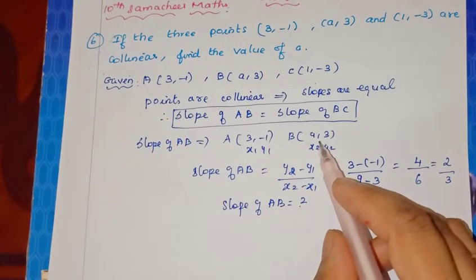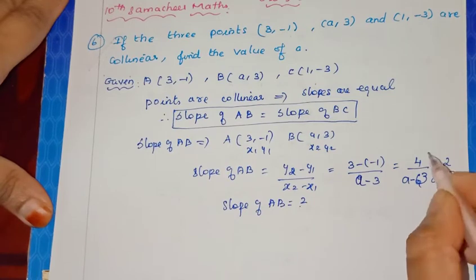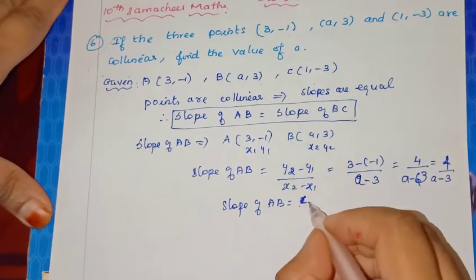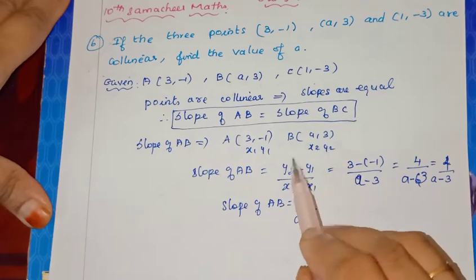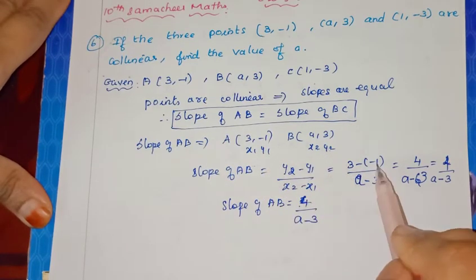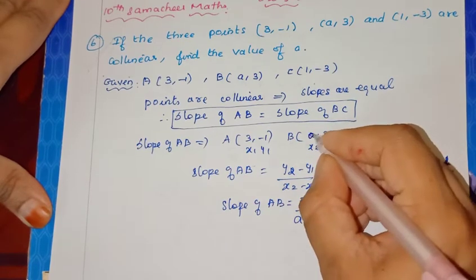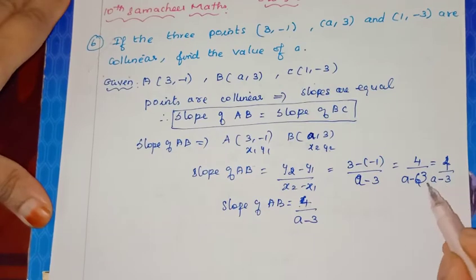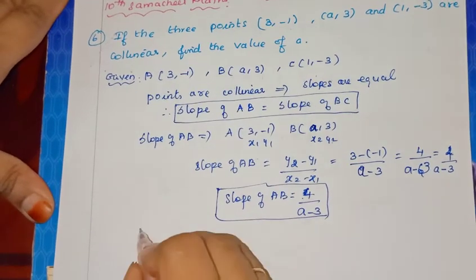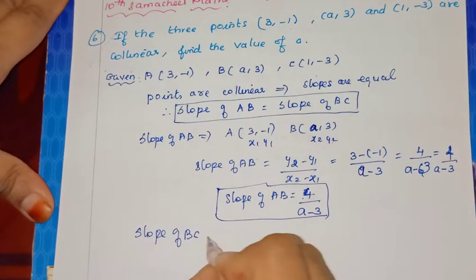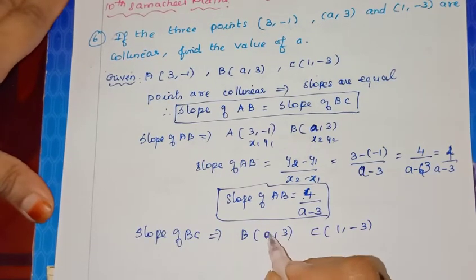So slope of AB is 4 by (a minus 3). Now for slope of BC: B is (a, 3), so x1 is a, y1 is 3. C is (1, -3), so x2 is 1, y2 is -3. Be careful: x2 minus x1 is a minus 3, giving slope of AB as 4 by (a minus 3). Next, slope of BC: using the same setup, 1 by (a minus 3).